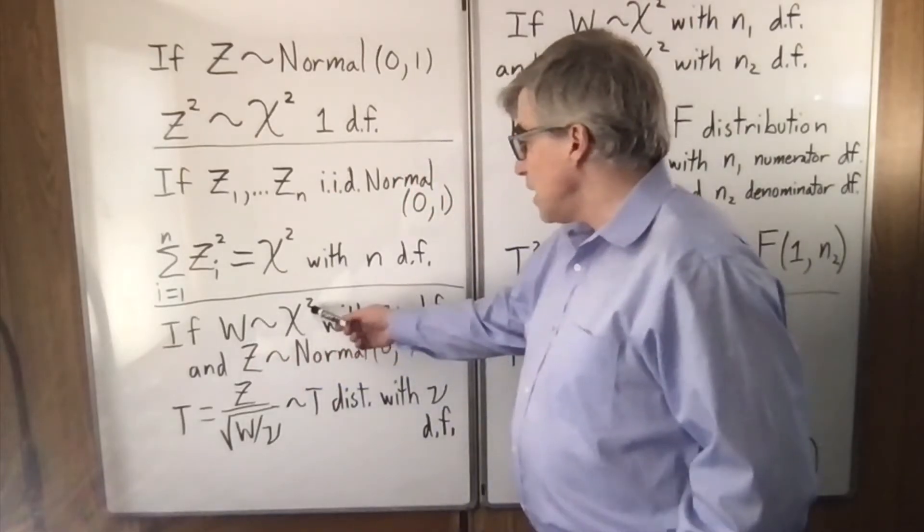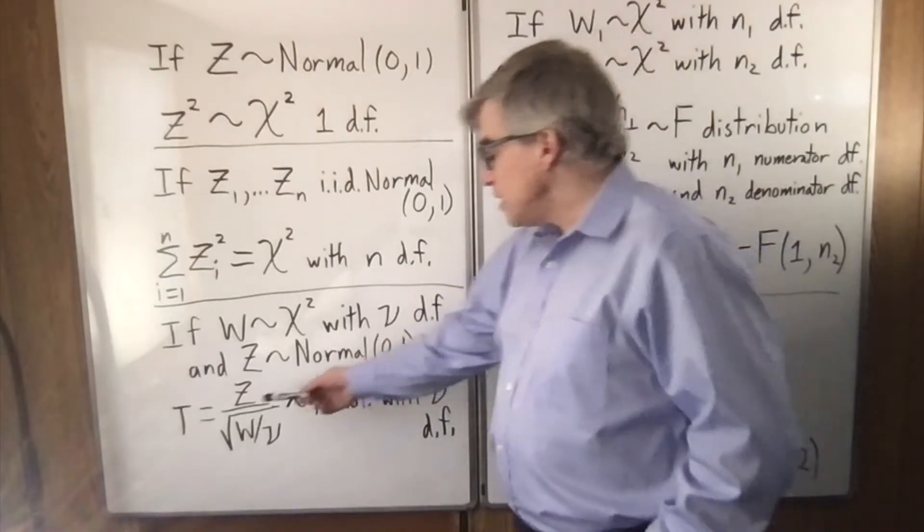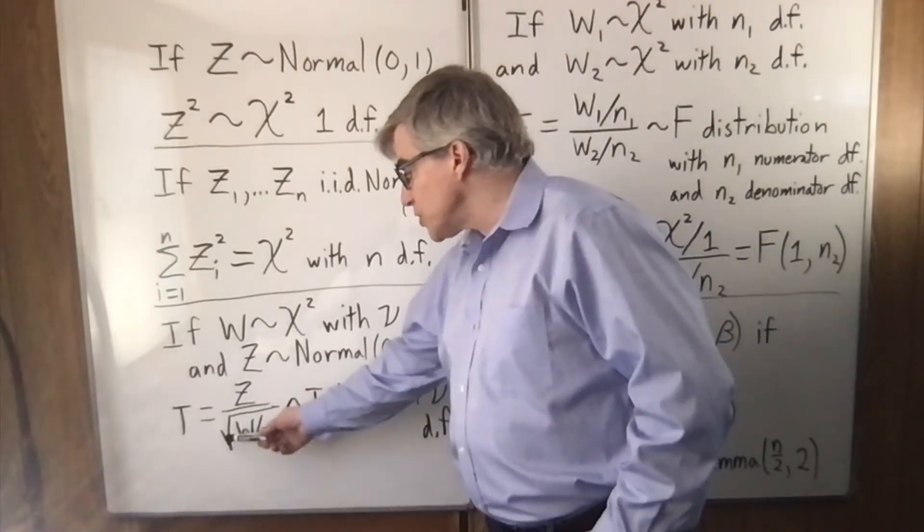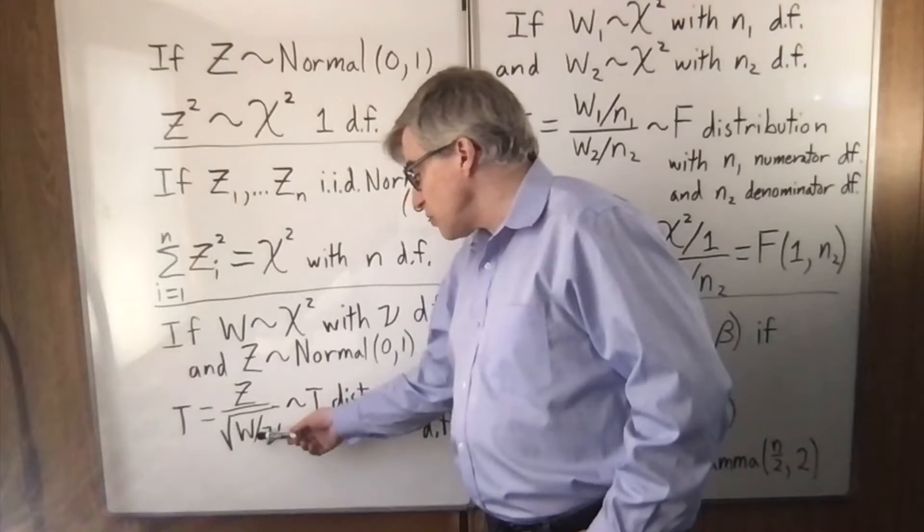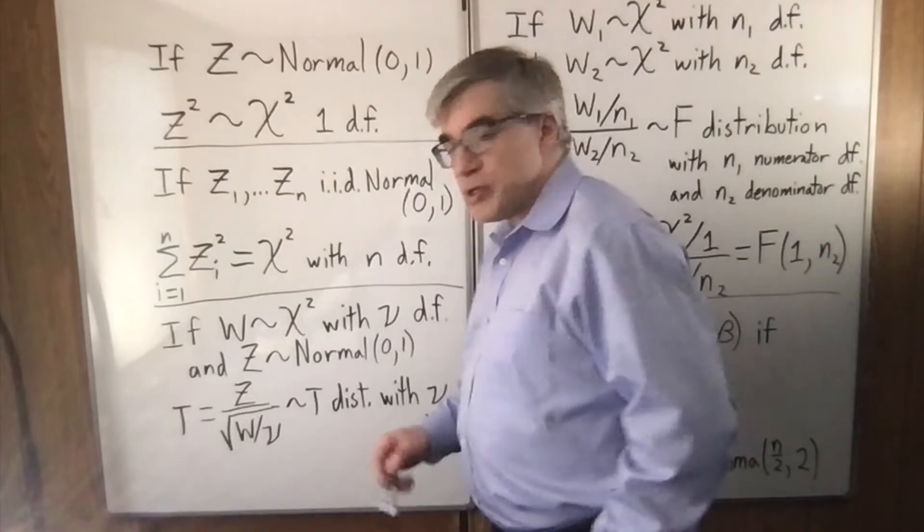If you have a chi-square with nu degrees of freedom and standard normal, then t equals z over square root of the chi-square divided by its number of degrees of freedom. That is a t-distribution with nu degrees of freedom.